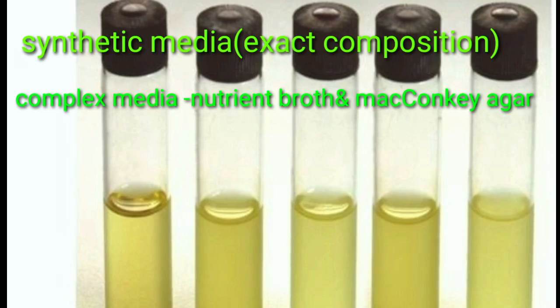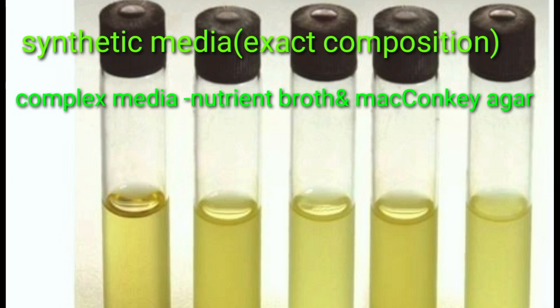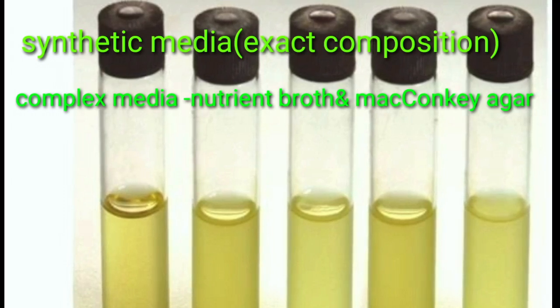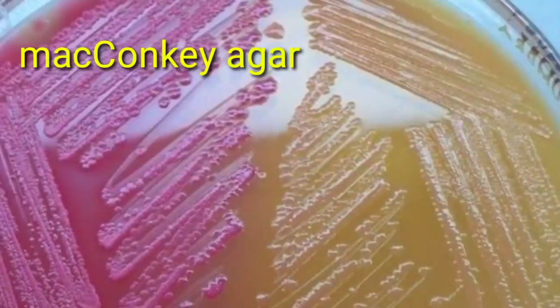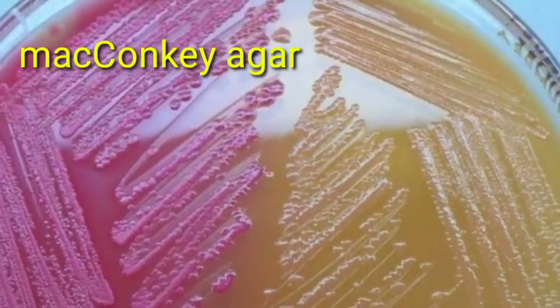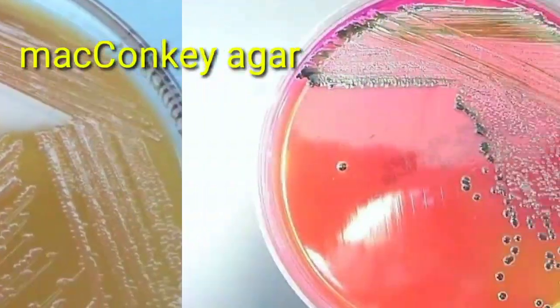A synthetic medium is a chemically defined medium in which the exact chemical composition is known. A complex medium is an undefined medium in which the exact chemical composition is not known. Examples of some common complex media are nutrient broth, tryptic soy broth, and MacConkey agar.